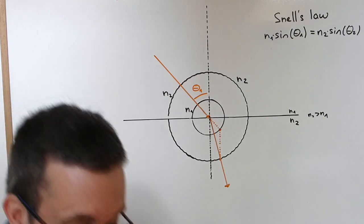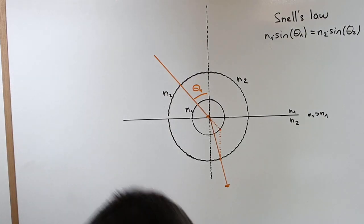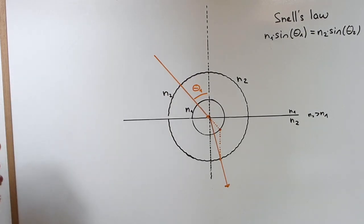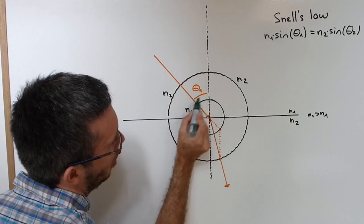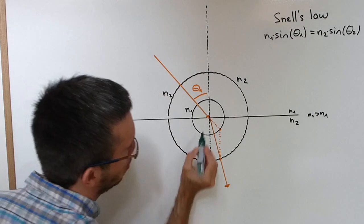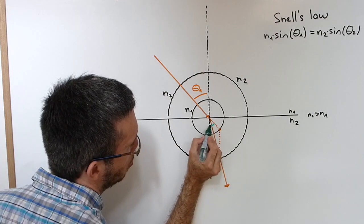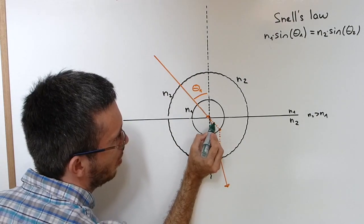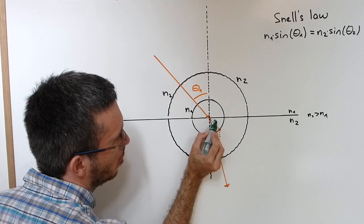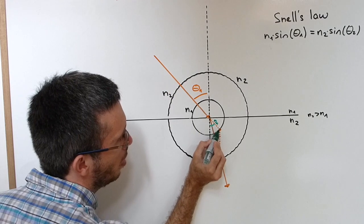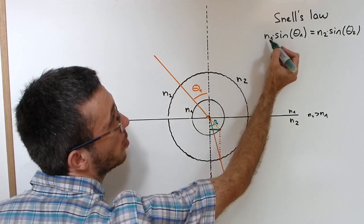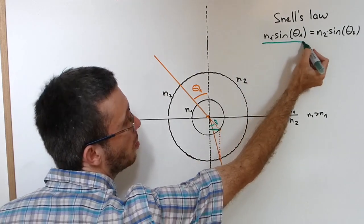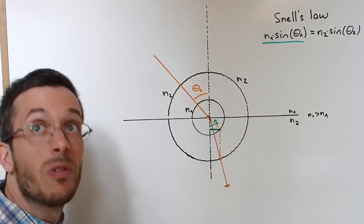Now you might wonder why is this working or how come this is working, and the answer is the following. If I have my angle theta1 here, then I have my angle theta1 here again, right? The angle of theta1, sin of it times n1 is this line here. So I have n1 times sin theta1 is my green line.